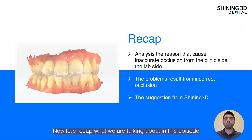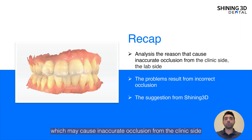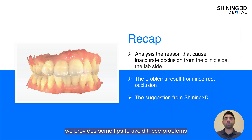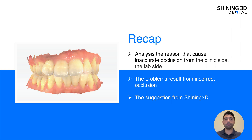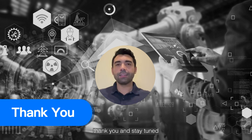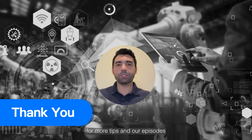Now, let's recap what we've been talking about in this episode. We made an analysis of the reasons which may cause inaccurate occlusion from the clinic side and the lab side, and the problems that result from incorrect occlusion. Meanwhile, we provided some tips to avoid these problems, with hope that it can help you get an accurate occlusal scan. Once again, thank you and stay tuned for more tips in our episodes.